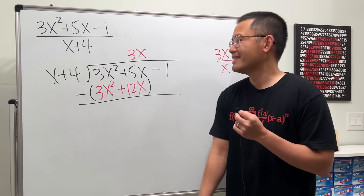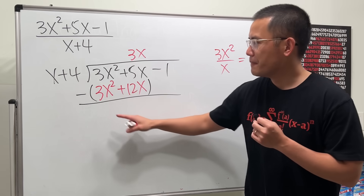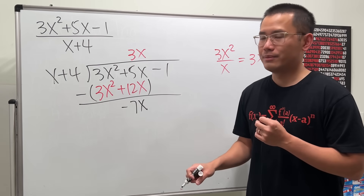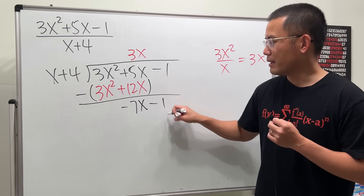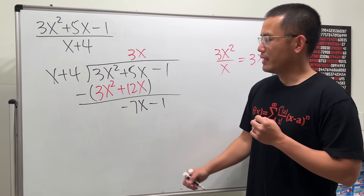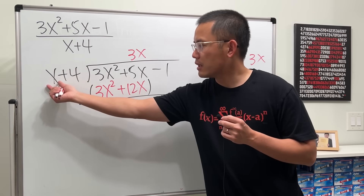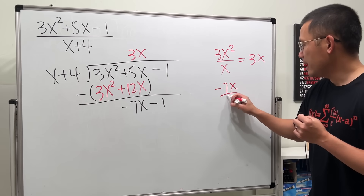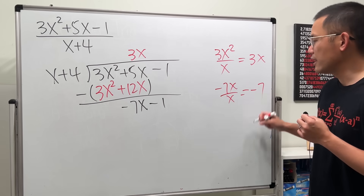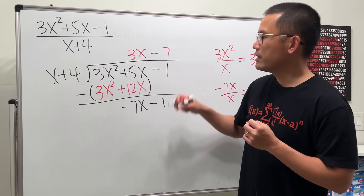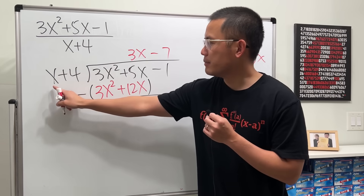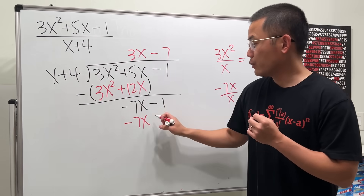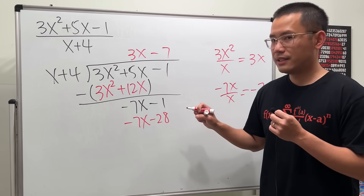The first term should always cancel. Then 5 minus 12 is negative 7, and you still have the x term. Bring down the minus 1. Now compare the first terms again: negative 7x divided by x gives negative 7. So put minus 7. Then negative 7 times x is negative 7x, and negative 7 times 4 is negative 28. Subtract with parentheses. Negative 1 minus negative 28 becomes plus 28, giving us positive 27.